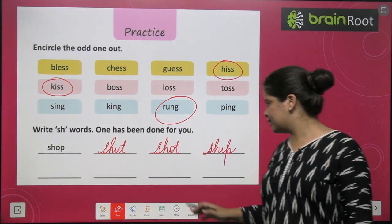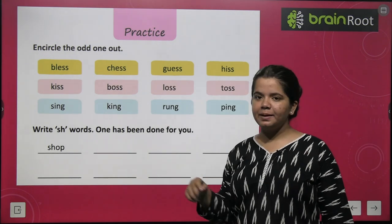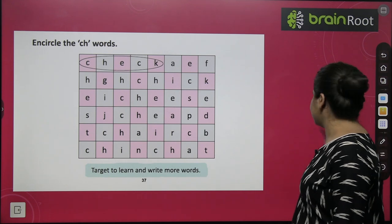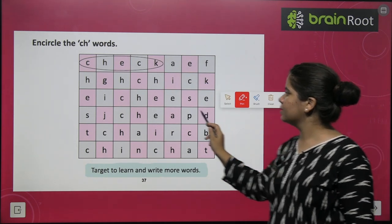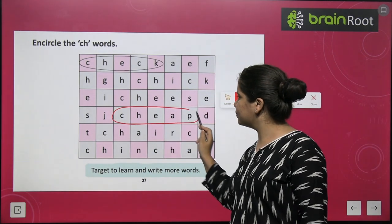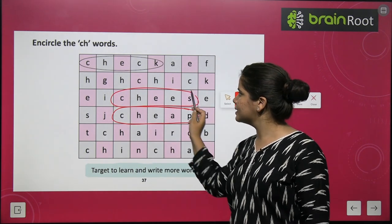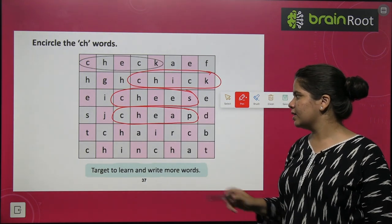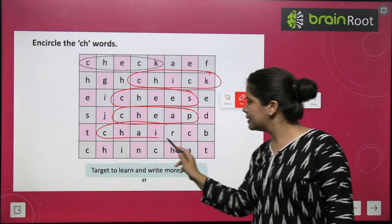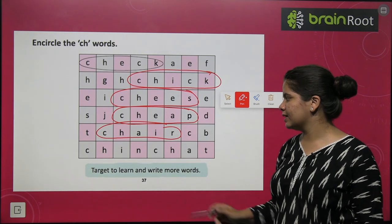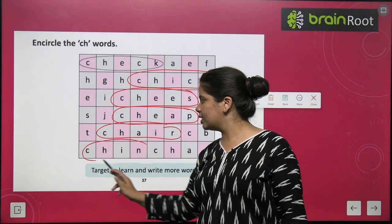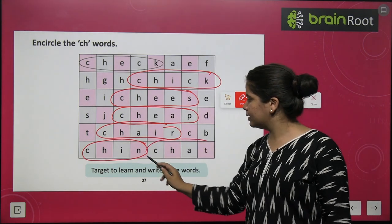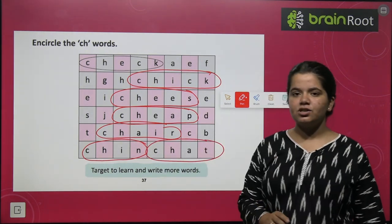Is that clear to everyone? Next, you will try these yourself. Now you have to encircle the CH words — any words that contain CH. Cheap, chess, chick, chair — CH-A-I-R. You can also see chin — C-H-I-N. And chart — C-H-A-R-T.